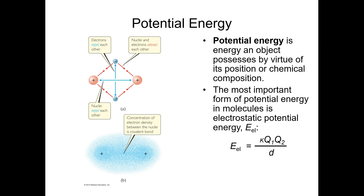Let's think about potential energy in terms of chemical compounds and the changes that occur when we form chemical bonds. Chemical bonds form because they are lower in potential energy than not forming the bond. In a hydrogen molecule H2, each hydrogen atom has a proton and an electron. There are two repulsive forces — the two nuclei repelling each other and the two electrons repelling each other — but four attractive forces: nucleus one with electron one, nucleus one with electron two, nucleus two with electron one, and nucleus two with electron two. Since there are more attractive forces than repulsive forces, it becomes energetically favorable for H2 to form.